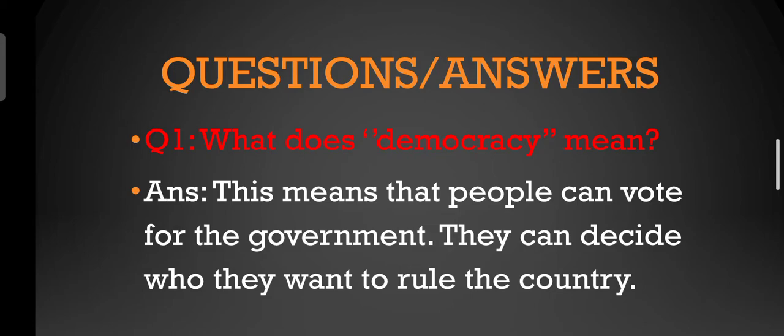The answer is: democracy means that people can vote for the government. They can decide who they want to rule the country.